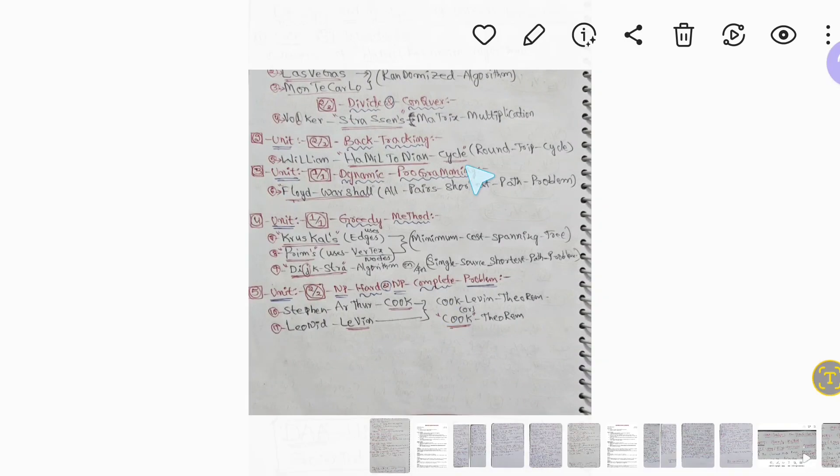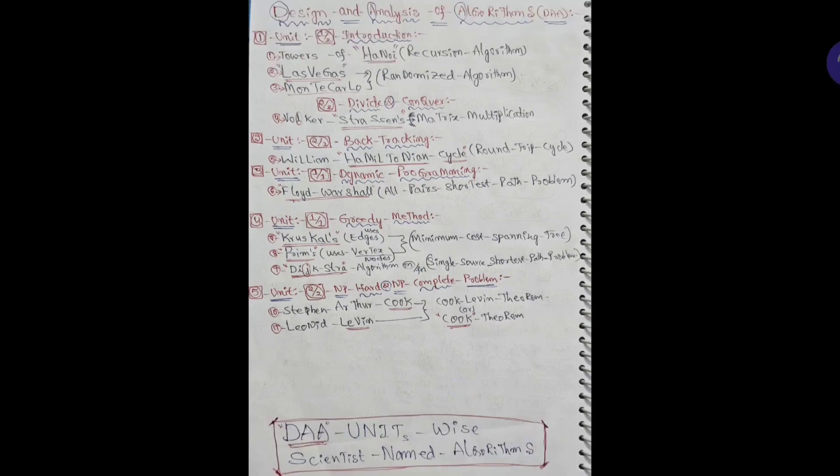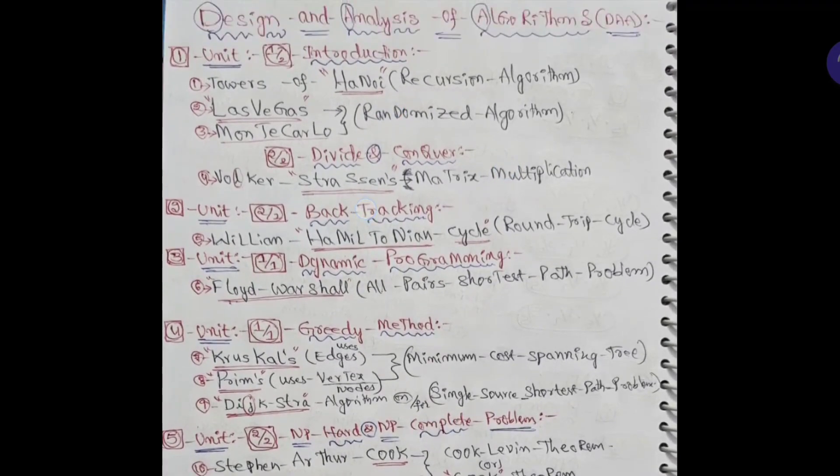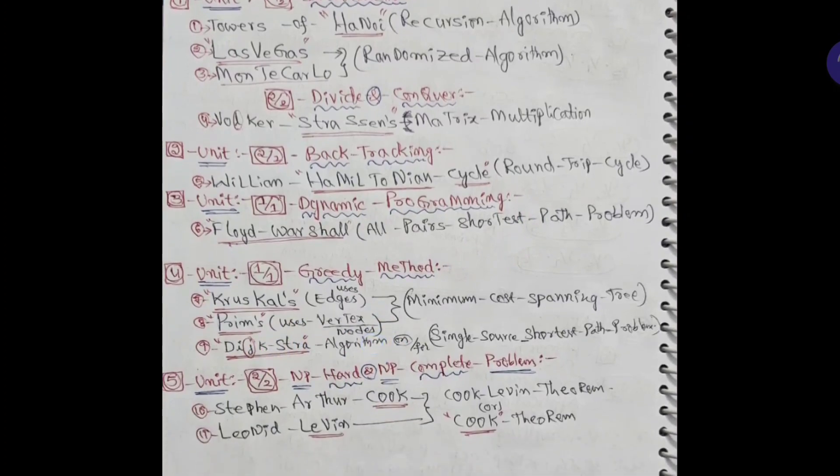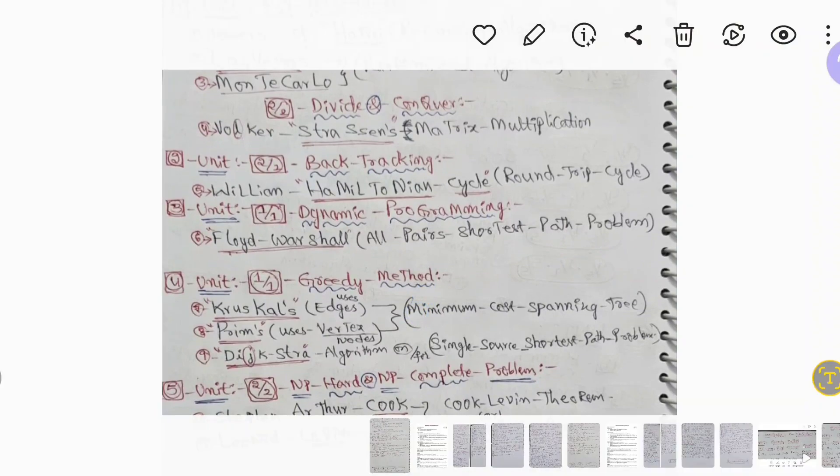And all scientist named algorithms I have covered. We have 11 scientist named algorithms: Hamiltonian cycle, Towers of Hanoi, Las Vegas algorithm, Monte Carlo algorithm from unit 1. And in unit 2 we have Strassen's matrix multiplication, Warshall, Floyd-Warshall all pairs shortest path, Kruskal, Prims, Dijkstra, and Cook's theorem. All the theorems I have covered, all scientist names. And I made it into playlist also for your convenient purpose.